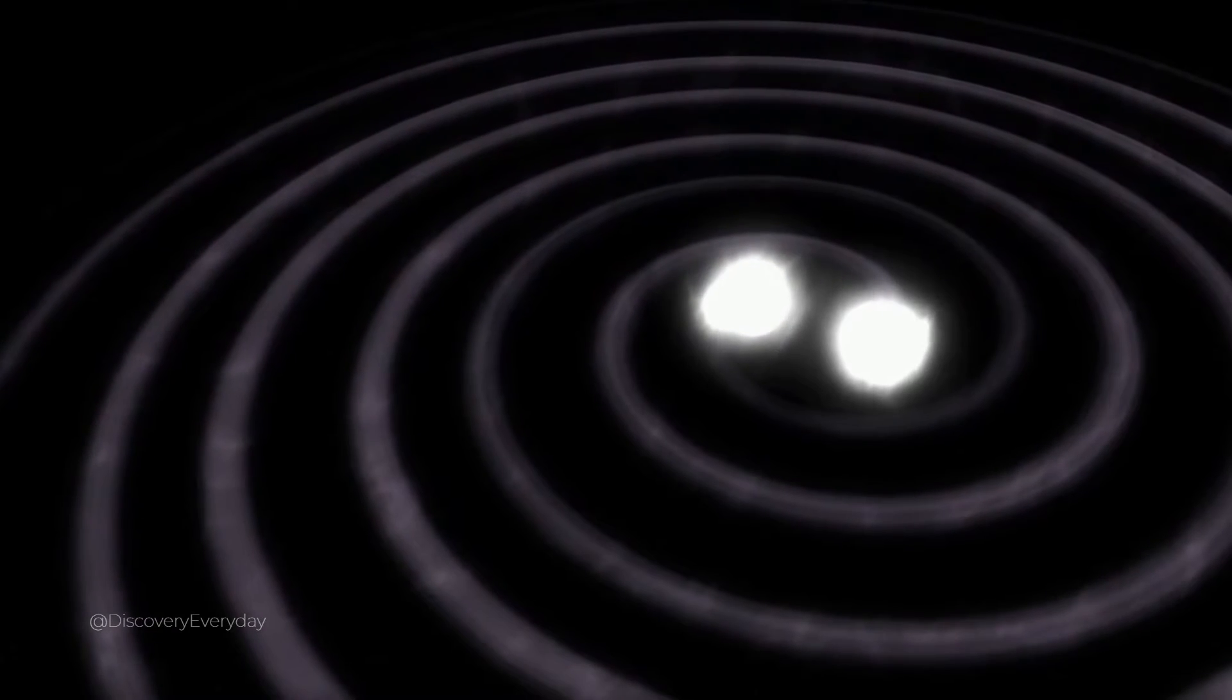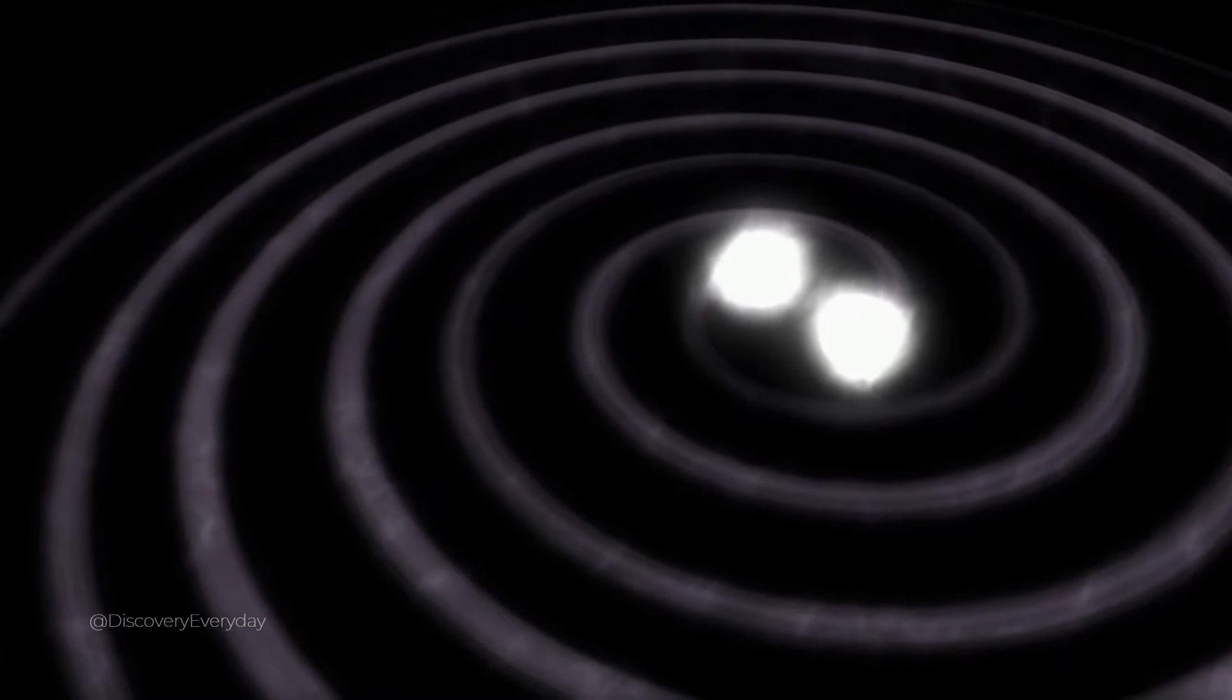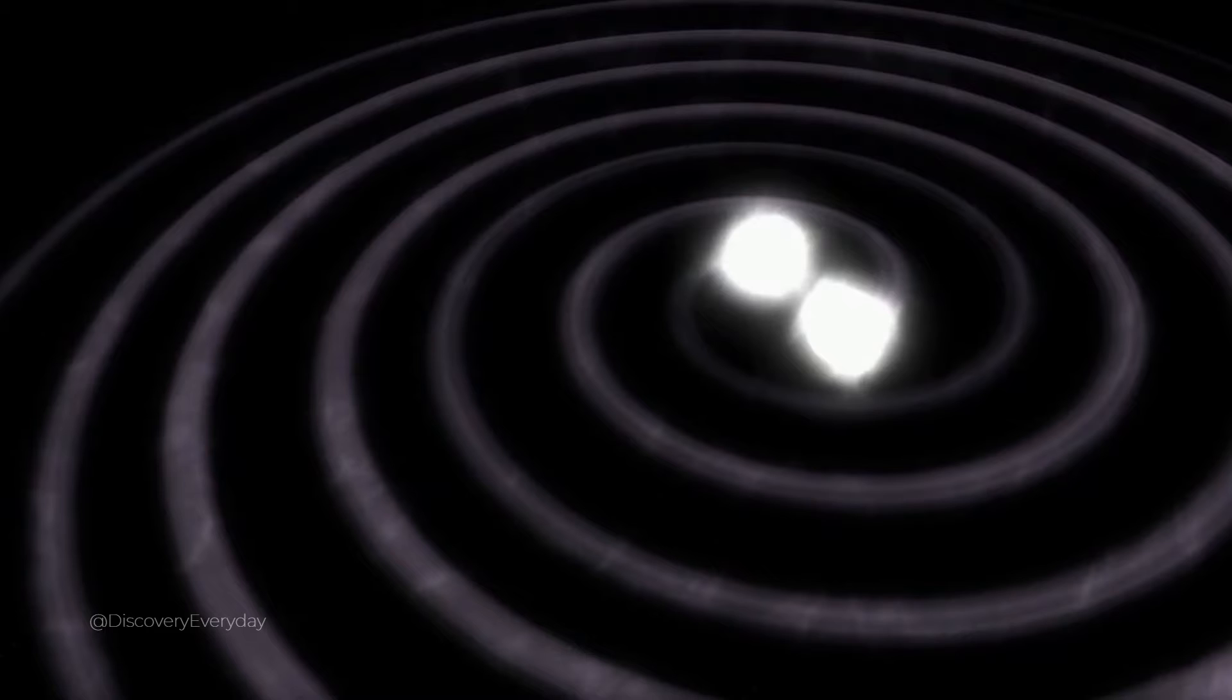The first theory is that, like their smaller stellar-mass siblings, supermassive black holes might be formed from the gravitational collapse of a celestial object. In this case, it might be a massive gas cloud in the early stages of galaxy formation, like how a star forms, but on a vastly larger scale.